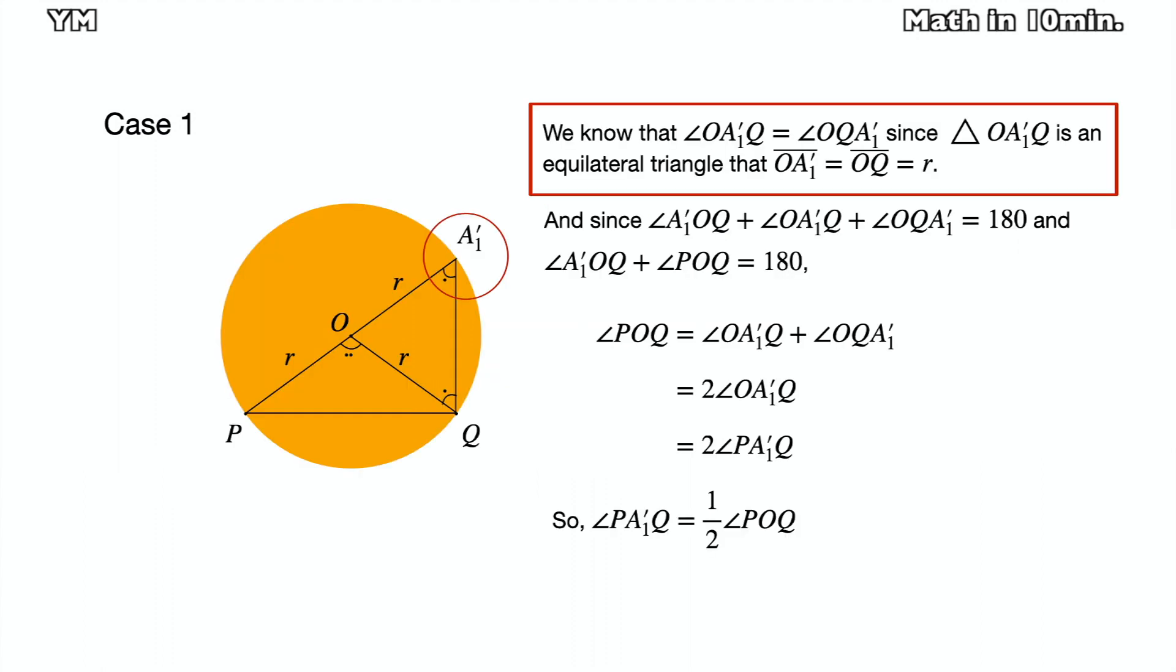We know that angle OA1Q equals angle OQA1 because triangle OA1Q is an isosceles triangle, where two of the sides are the radius of the yellow circle. And angle POQ equals angle OA1Q plus angle OQA1 because there is a theorem that the exterior angle of a vertex in a triangle equals the addition of the other two interior angles.